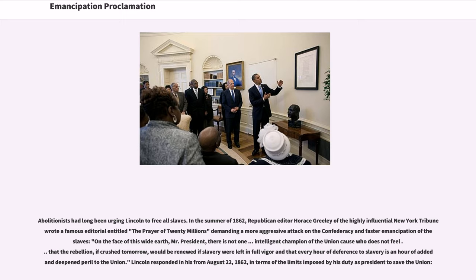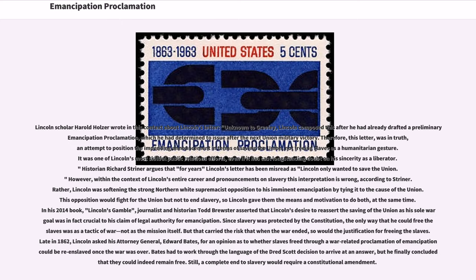Lincoln responded on August 22, 1862, in terms of the limits imposed by his duty as president to save the Union. Lincoln scholar Harold Holzer wrote that, unknown to Greeley, Lincoln composed this response after he had already drafted a preliminary emancipation proclamation, which he had determined to issue after the next Union military victory. Therefore, this letter was in truth an attempt to position the impending announcement in terms of saving the Union, not freeing slaves as a humanitarian gesture. It was one of Lincoln's most skillful public relations efforts, even if it has cast long-standing doubt on his sincerity as a liberator.